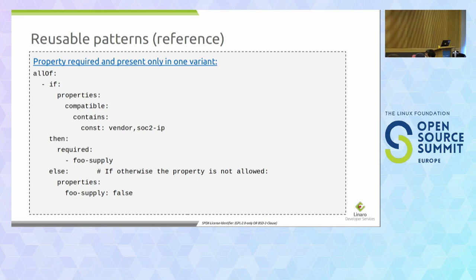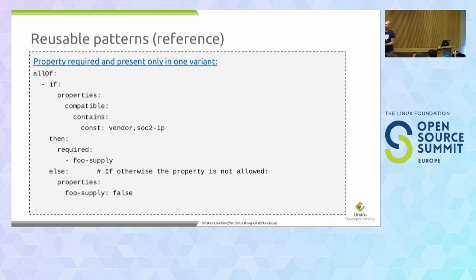Question: could the DT binding check tool be extended to check for these do's and don'ts recommendations? Patches are welcome. It's quite tricky, but the DT schema validation tool is written in Python, which many people know. The Linux kernel would benefit from people writing more tools. You can also send a pull request on GitHub.